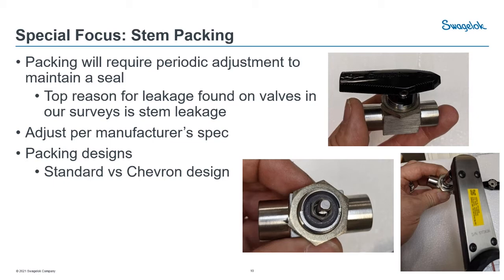Here's an example using one of our 40 series ball valves. If you remove the handle, you'll see a hex flat underneath — that's your packing nut adjustment. There will be a manufacturer torque spec, and you use a torque wrench to torque it down to the specified value. Stem leakage is the number one reason we find for leakage on plant surveys. It's a spot where many of us set it and forget it, but that seal wears every single time you actuate the valve. After months and years of use, you'll eventually need a little adjustment.